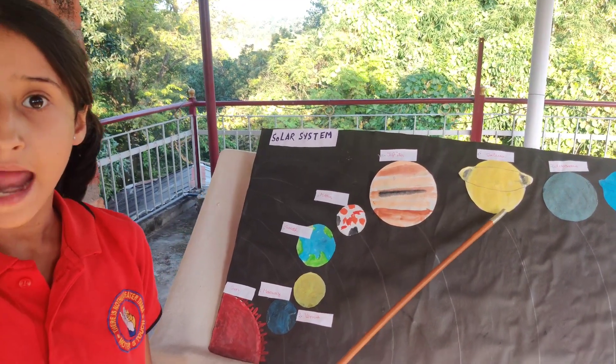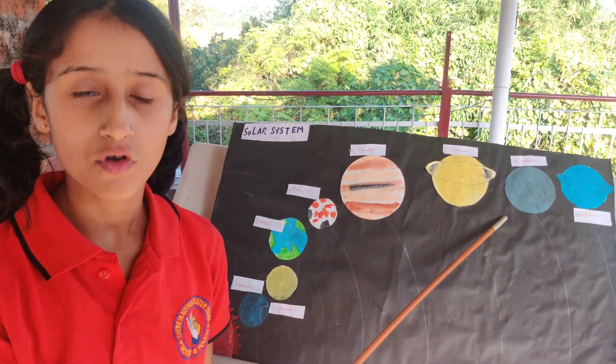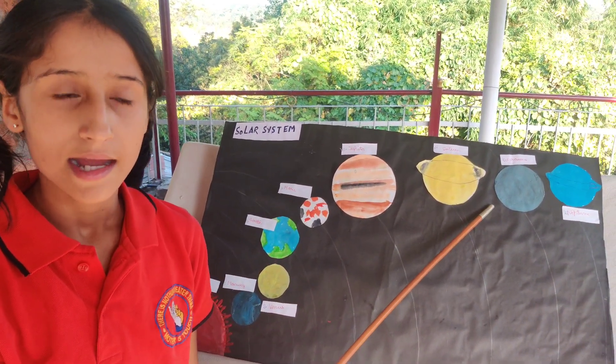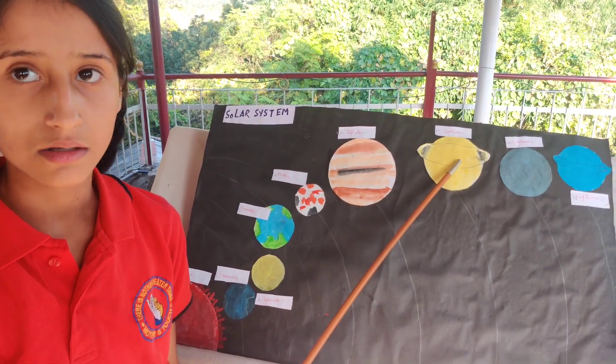Saturn. Saturn is the 6th planet from the sun. It is yellowish in color.